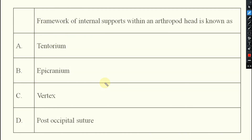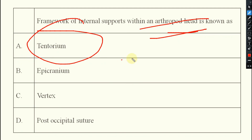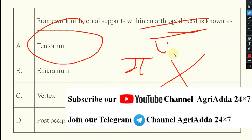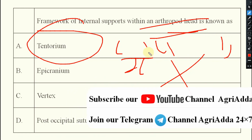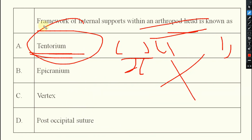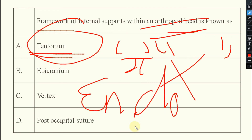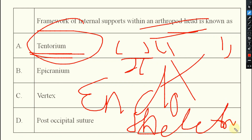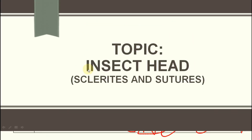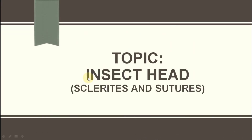Next question: the framework of internal supports within an arthropod head is known as what? The answer is the tentorium, which has a pi-shaped or X-shaped structure. The tentorium is the endoskeleton of the insect head — we can also call it the endoskeleton.